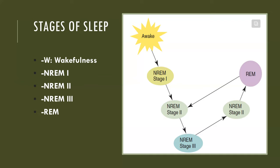NREM stage three is deep sleep — you are difficult to arouse and very hard to wake. If awakened in this stage, you may be really confused. The parasympathetic nervous system predominates: temperature, pulse, respirations, and blood pressure slow even more. Skeletal muscles are very relaxed and you may be snoring. Some dreaming may happen, but dreams are less vivid than in REM sleep. This stage is especially important for the restorative process, such as healing, growth, and tissue renewal, and makes up about 20 to 25% of sleep time.